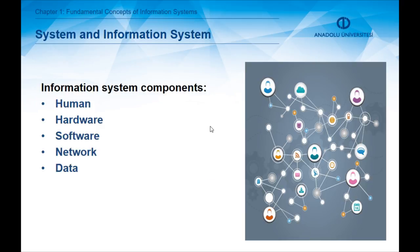An information system has five fundamental components: human, hardware, software, network, and data. Hardware, software, network, and data are generally termed as information technologies, which will be described in the information technologies chapter — the second chapter of this course.